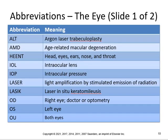Some abbreviations: ALT — argon laser trabeculoplasty. AMD — age-related macular degeneration. HEENT — head, ears, nose, and throat. IOL — intraocular lens. IOP — intraocular pressure.